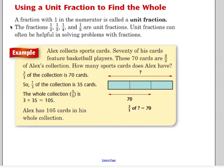You can also use unit fractions to find the whole. And I highly recommend this strategy. It works almost all of the time. A fraction with one in the numerator is called a unit fraction. For example, the fractions one half, one third, one fourth, one fifth, they're all unit fractions. One seventeenth, one ninth. Unit fractions can often be helpful in solving problems with fractions. Let's take a look at an example. Alex collects sports cards. Seventy of his cards feature basketball players. These seventy cards are two thirds of Alex's collection. How many sports cards does Alex have? Well, we know that two thirds of the collection is seventy cards. So, two thirds of something equals seventy.